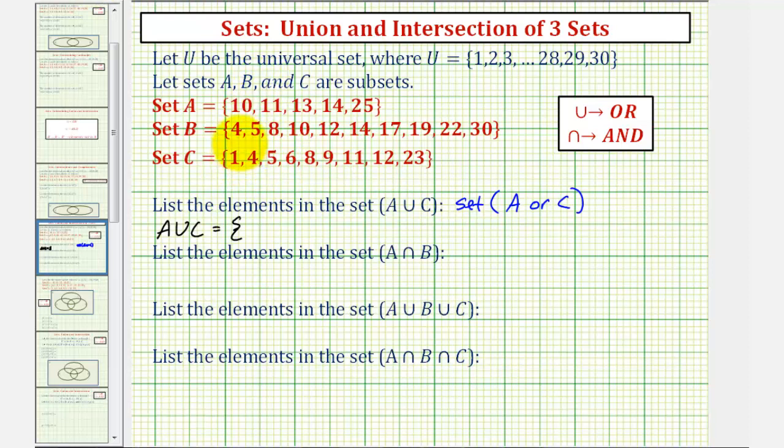So looking at all the elements in set A and set C, if it occurs in either set, it will be in A union C. So looking at C, notice how it contains one, four, five, six, eight, nine. So those elements will be in the union. Next set A has ten. They both have eleven. C has twelve. A has thirteen and fourteen. Next would be twenty-three in set C. And then finally twenty-five in set A. So these are the elements in A union C.